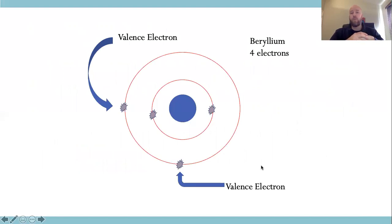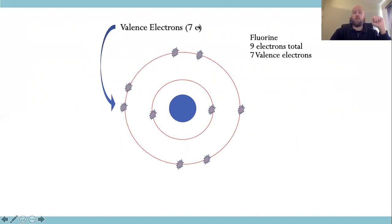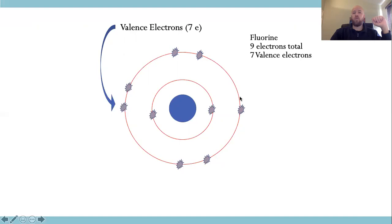When we look at something like beryllium, we have the 1s2 and the 2s2. So the 2s2 electrons represent the outer layer, or what we would call our valence electrons — the inner layer is irrelevant. Here we look at fluorine. Fluorine has seven valence electrons — the outer layer. There's your 1s2, 2s2, 2p2, 2p4, 2p5. So it's missing one electron to get to 2p6, to complete its octet.